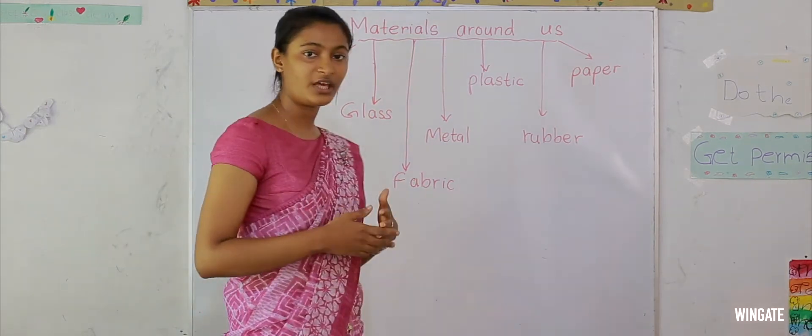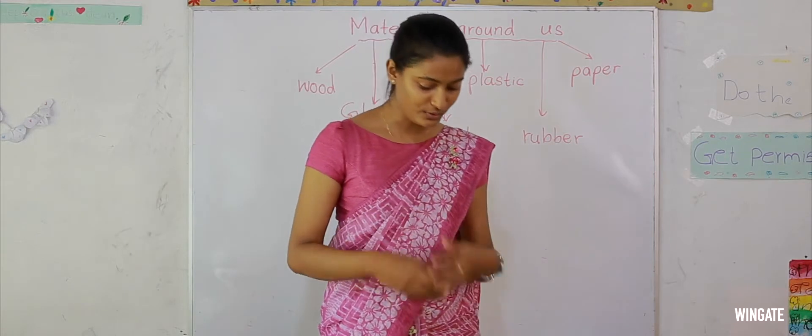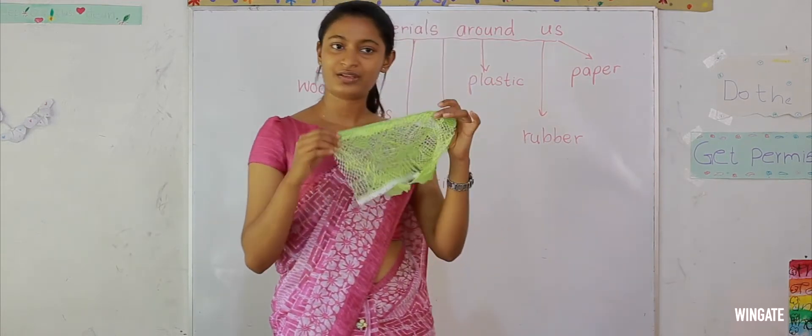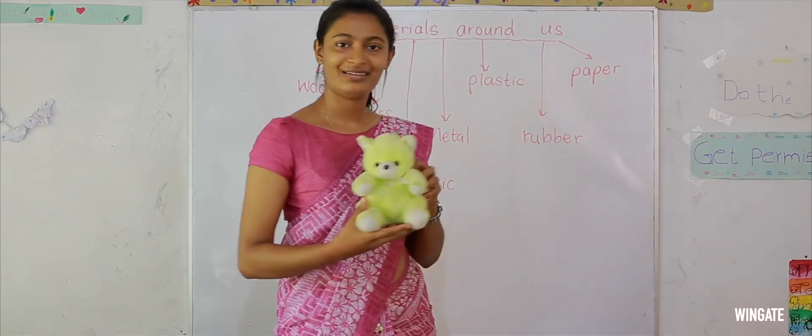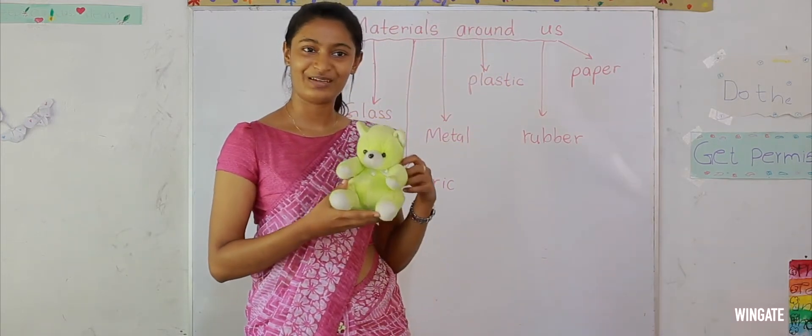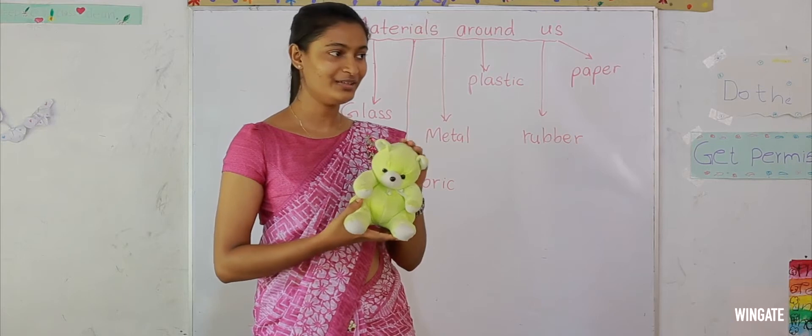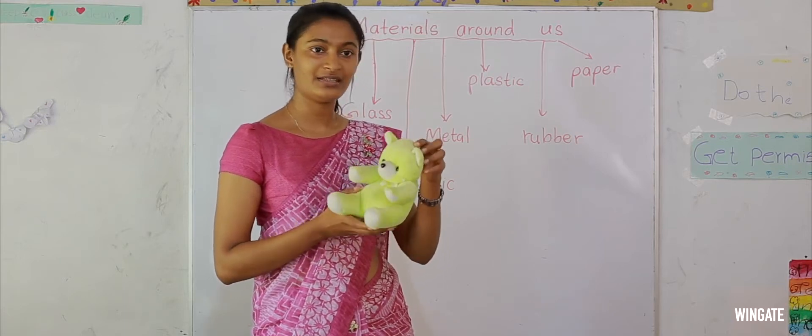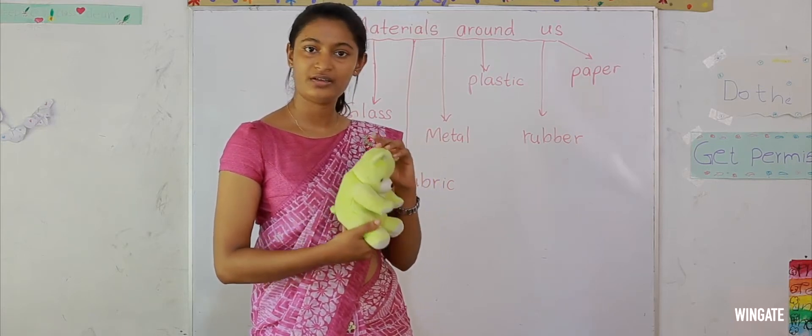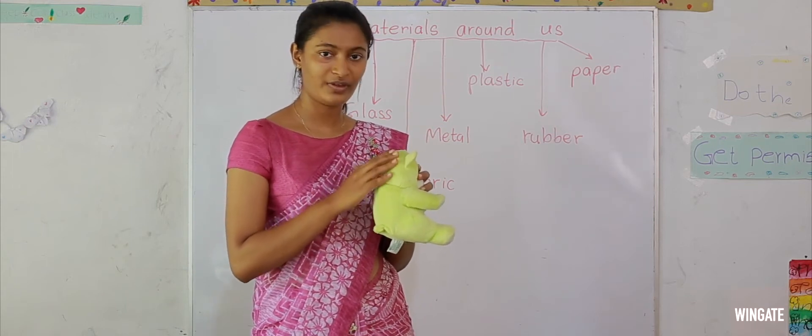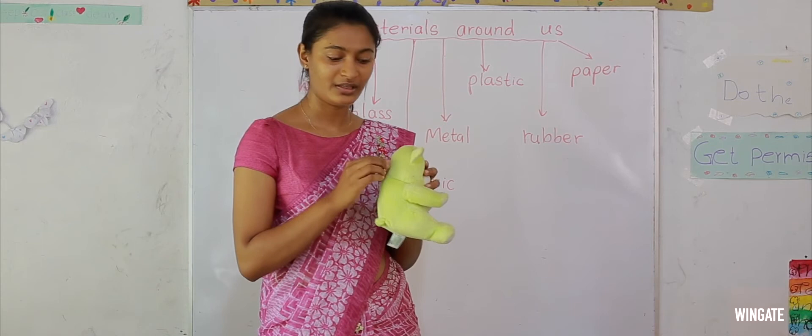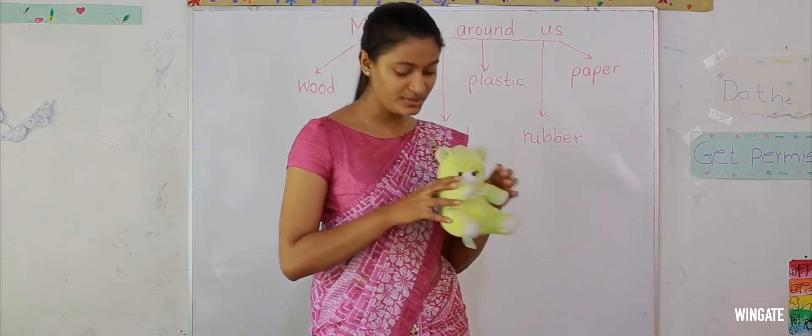Fabric means the different types of clothes that we use. Can you see? This is one type of cloth. And here, a sweet, pretty teddy bear. Can you see? There is a material used to make this teddy bear. It is a fabric. You can feel it. Touch and feel it. They have used a fabric to make this teddy bear.